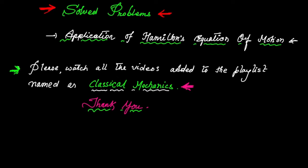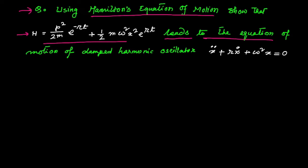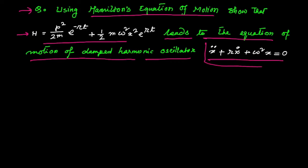Hello friends! In this video we are going to solve a few problems using Hamilton's equation of motion. Please watch all the videos added to the playlist named 'Classical Mechanics.' This is our first question: given this Hamiltonian, we need to obtain the equation of motion of the harmonic oscillator from this equation.